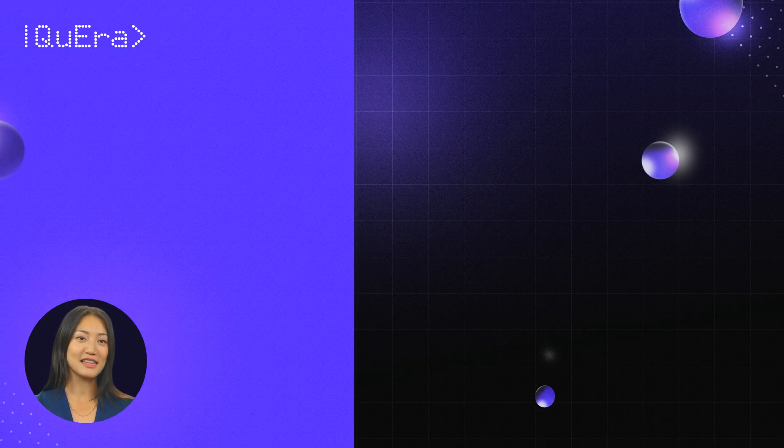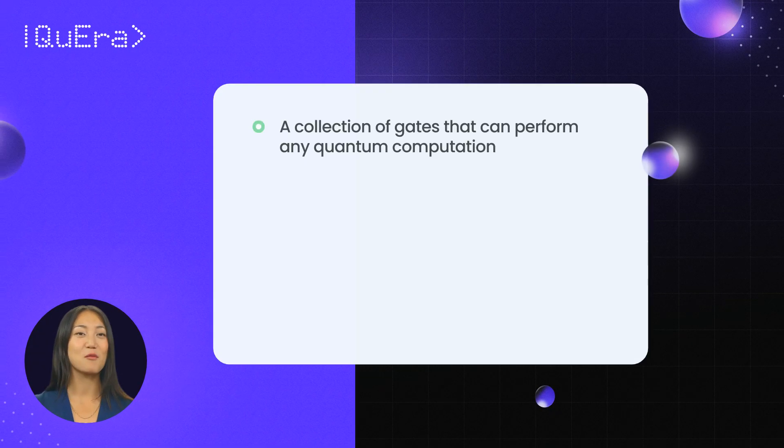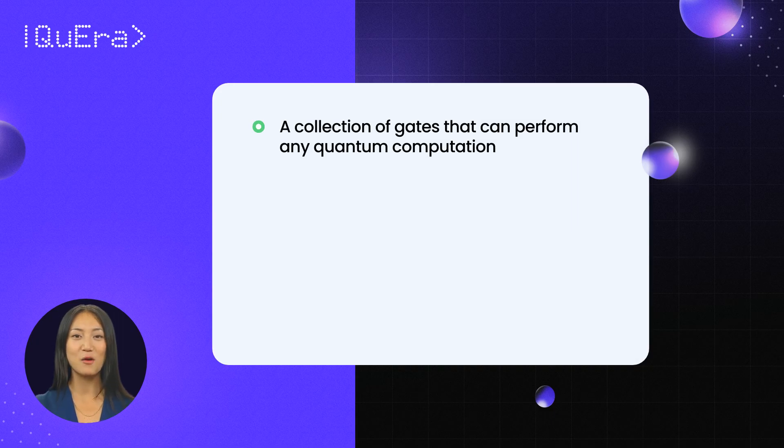A universal gate set is a collection of quantum gates that can perform any quantum computation to an arbitrary degree of accuracy.